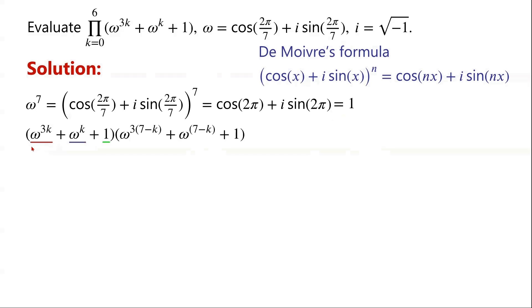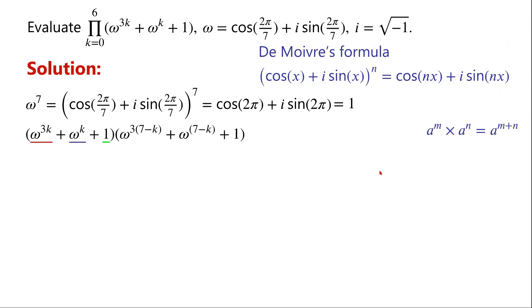Now we consider omega to the power of 3k plus omega to the power of k plus 1, times omega to the power of 3 times 7 minus k plus omega to the power of 7 minus k plus 1. By applying these properties: